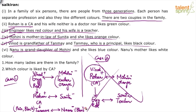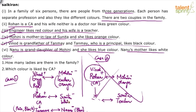Next point: Nanu is the granddaughter of Mohini. This confirms Mohini is in the first generation. Nanu would be a sibling of Tanmay. Being a granddaughter, Nanu is clearly female. Nanu likes blue color. Nanu's mother — who is Sunita — likes white color. So Sunita likes white color.